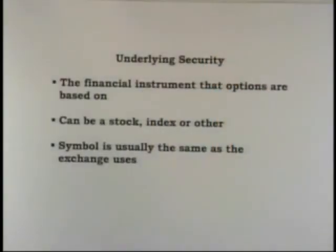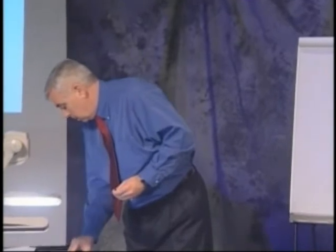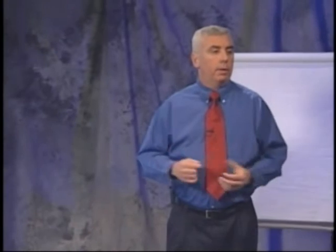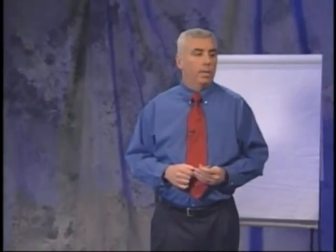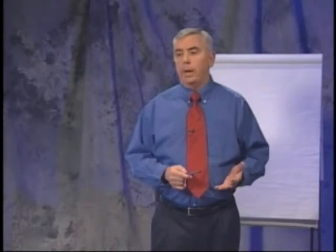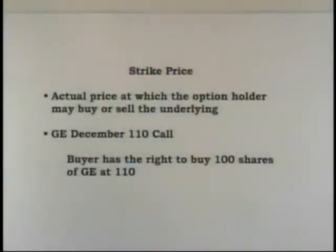The underlying security can be a stock, it can be an index, or there are also options on futures — it could be pork belly or silver — so there are a lot of underlying instruments that have options. The option usually uses the same symbol that the stock trades at, if it's a stock. The strike price is the price at which the option holder or buyer will buy the stock. For example, if you buy the General Electric December 110 call, you have the right as the buyer to buy 100 shares of GE at $110 before expiration.